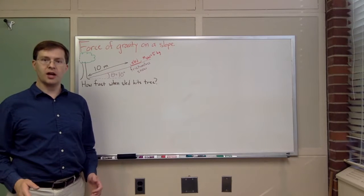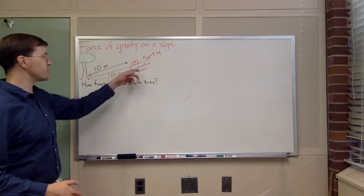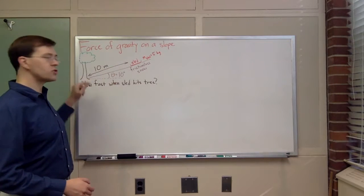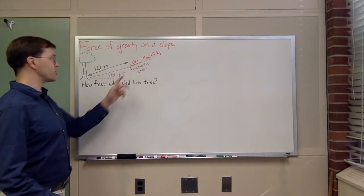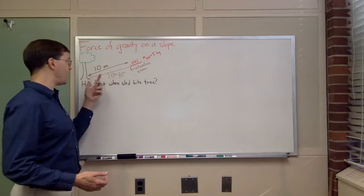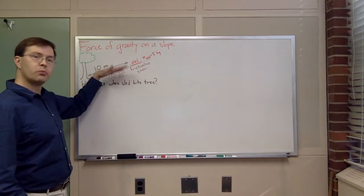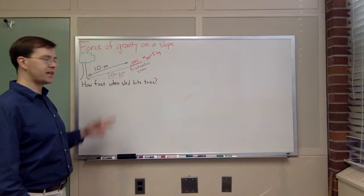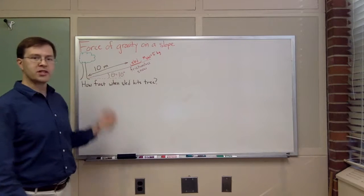I want to do an example of using Newton's laws to analyze the motion of a sled sliding down a slope. In particular, this is a slope made of frictionless snow, and the sled starts 10 meters away from the trunk of a very firm, hard, dangerous tree. The sled is going to slide down and slam into the trunk of the tree. If the slope is 10 degrees above horizontal, how fast will the sled be going right before it slams into the tree?